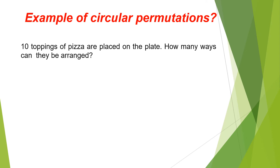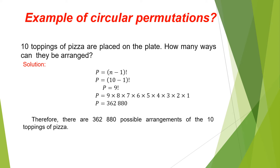Example of Circular Permutations: 10 toppings of pizza are placed on a plate. How many ways can they be arranged? Solution: using the formula P equals (n minus 1) factorial, we substitute the value for n, which is 10. So 10 minus 1 equals 9 factorial.